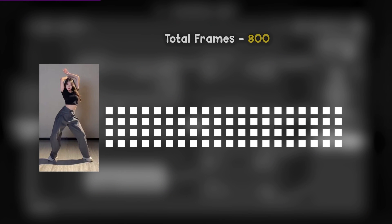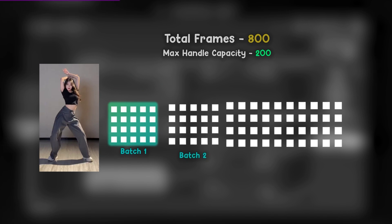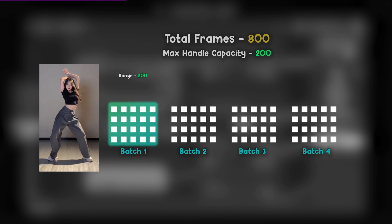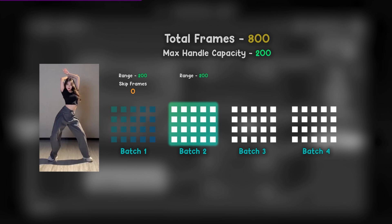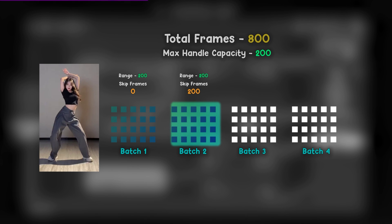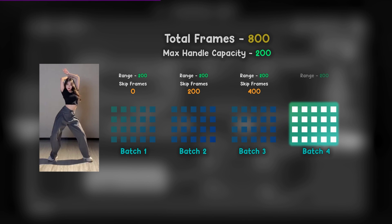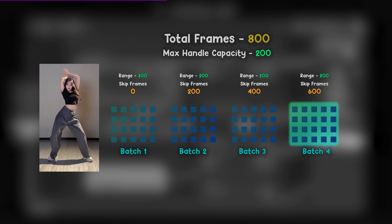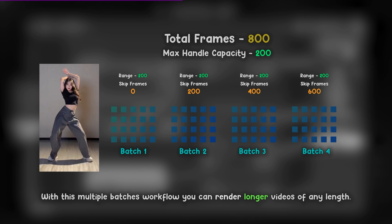Suppose we have a video of 800 frames and our PC can handle only 200 frames at a time, so we will render the frames in multiple batches. After every batch we will increase the skip frames value to the total of already outputted images. With this multiple batches workflow you can render longer videos of any length.